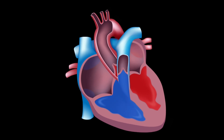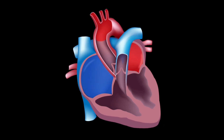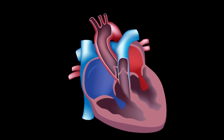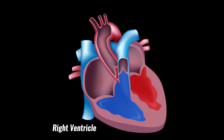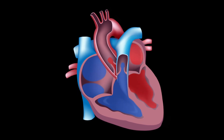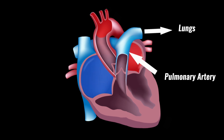Deoxygenated blood from the body enters the right atrium from the inferior and superior vena cava. It then passes into the right ventricle. When the heart contracts, it pumps deoxygenated blood from the right ventricle through the pulmonary artery to the lungs.